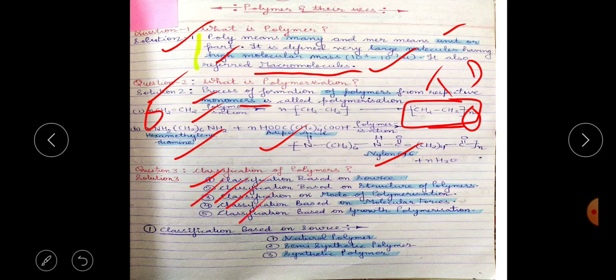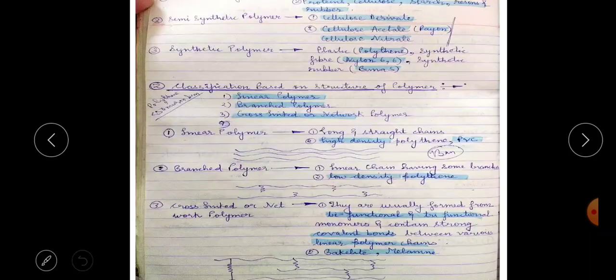First, classification based on source — this question was directly asked in RAS 2018. There are three types of polymers on the basis of source: natural polymers, semi-synthetic polymers, and synthetic polymers. Natural polymers include proteins, cellulose, starch, resins, and rubber.